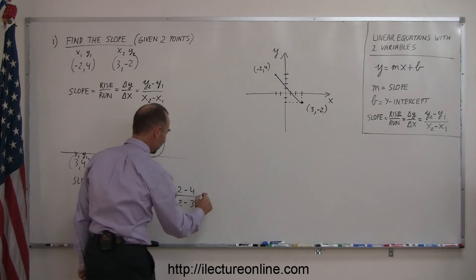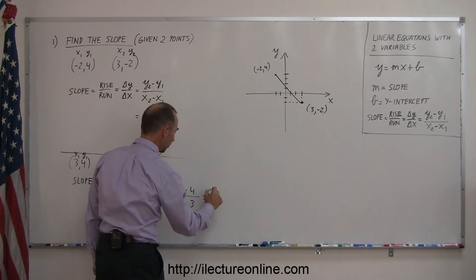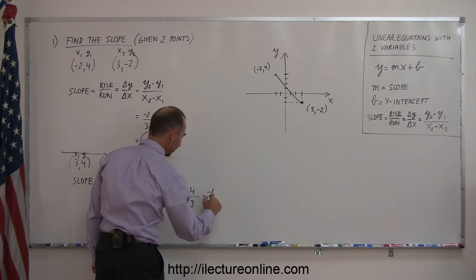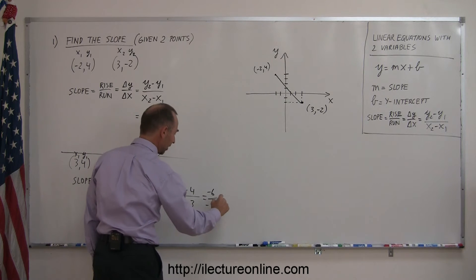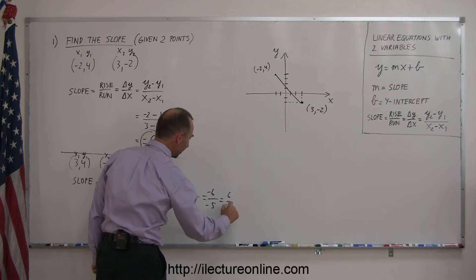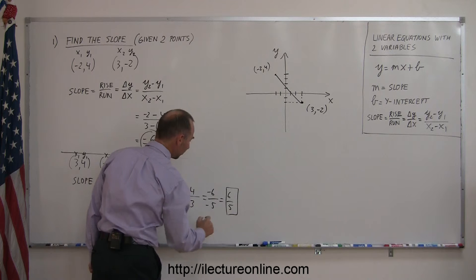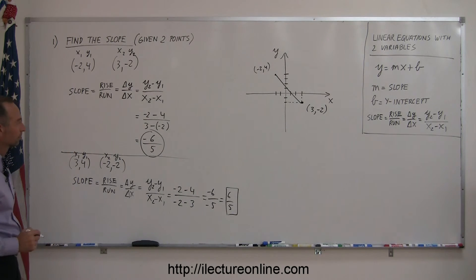Okay? So, in this case, we get negative 2, negative 4, which is a negative 6, divided by negative 2, negative 3, which is a minus 5. And the negatives cancel out, so I get 6 over 5. And here, we have a positive slope. Okay? One more example. These aren't so bad.